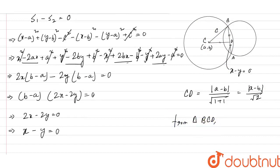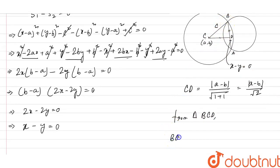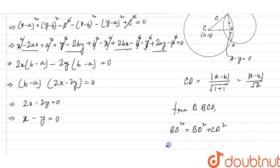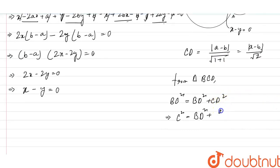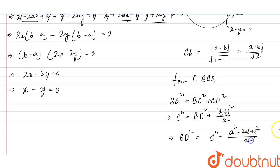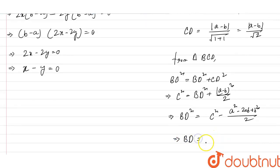From triangle BCD, applying the Pythagorean theorem: BC² = BD² + CD². Here BC is the radius c, and CD = |a - b| / √2, so CD² = (a - b)² / 2. Therefore BD² = c² - (a - b)² / 2.